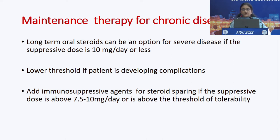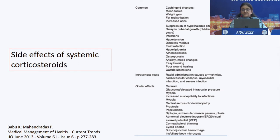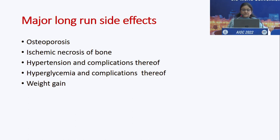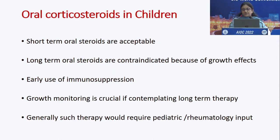Long-term corticosteroids are an option for severe chronic inflammatory diseases, but immunosuppressive agents should be added for steroid-sparing effect if the suppressive dose exceeds 7.5–10 mg/day or surpasses the threshold of tolerability. The systemic side effects of corticosteroids — most importantly osteoporosis, ischemic necrosis of the femur, hypertension, hyperglycemia, and weight gain — must be kept in mind. Oral corticosteroids are contraindicated in children for long-term use; they should be shifted early to immunosuppressants which are far safer and will not hamper the children's growth.